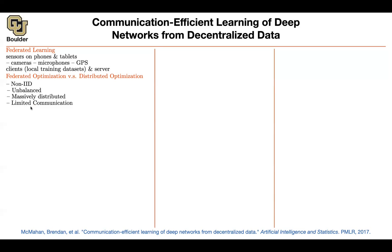From the technology perspective, we have limited computation and communication when it comes to federated learning. Sometimes a user's device might be in a location with intermittent internet connection, or a user's device might be absent altogether. These are usually low-quality communications, unlike distributed optimization where you have highly optimized network connections between your GPUs. So we have to deal with these challenges.